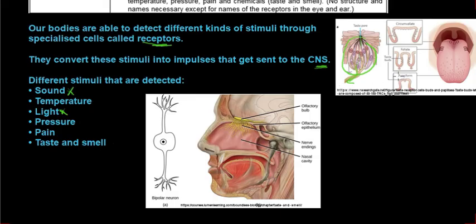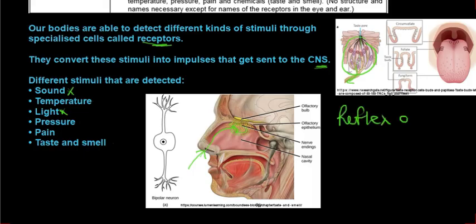That will tell you what kind of taste you are experiencing. Same with your nose smelling something — as air travels through your nostrils, it will go into your nasal passage, and there will be receptor cells in your nasal passage picking up on the different particles in the air that you've smelled. That is the basics of receptors. If you understand the reflex arc, then you will also understand receptors in general.